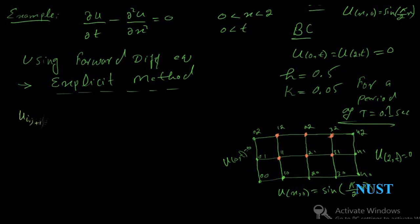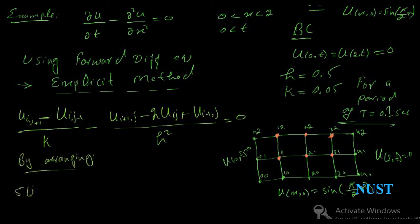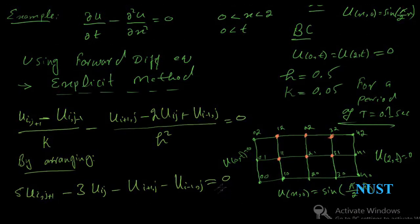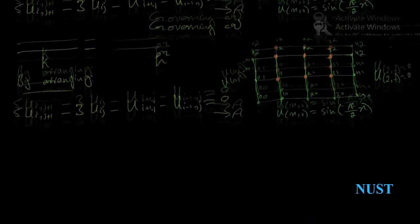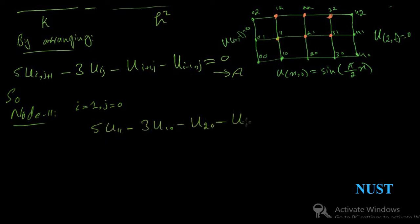Discretize the given equation using the forward differential formula for time t and the central differential formula for space x. Making the arrangement, we get a governing equation A. To write the equation for node 11 using the governing equation, set I equal to 1 and j equal to 0. We get the unknown term U11 as shown.